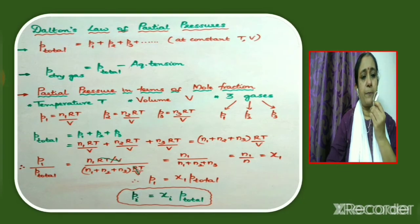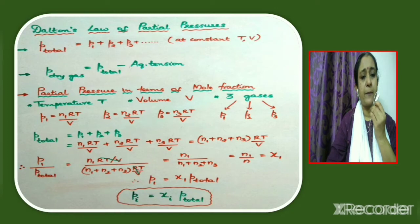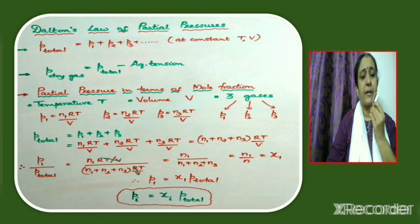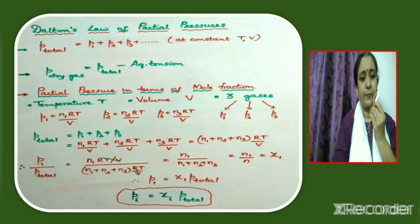Partial pressure in terms of mole fraction. What is the relationship between partial pressure and mole fraction? For an i-th component, the partial pressure Pi is given as equal to χi times P_total, where χi is the mole fraction.